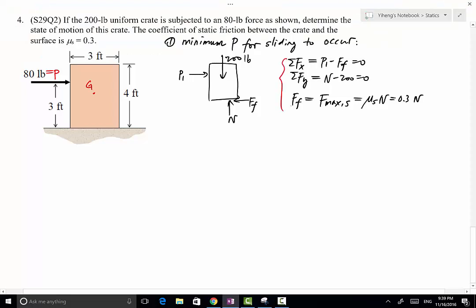So as you can see, we have three equations and three unknowns, P1, FF, and normal force N. So from here we can solve for P1 to be 60 pounds.